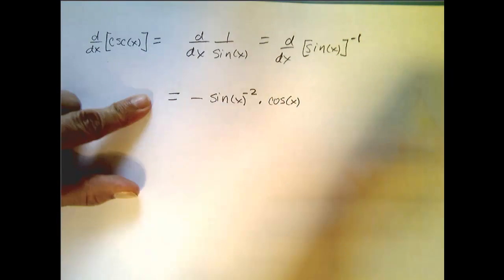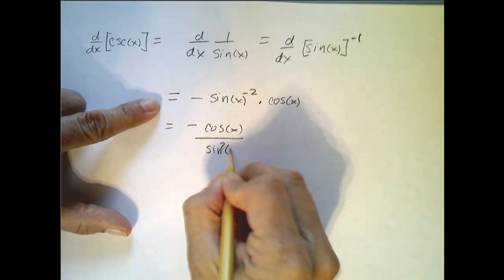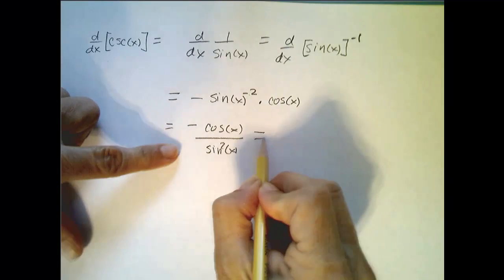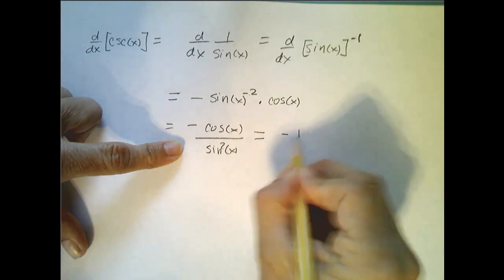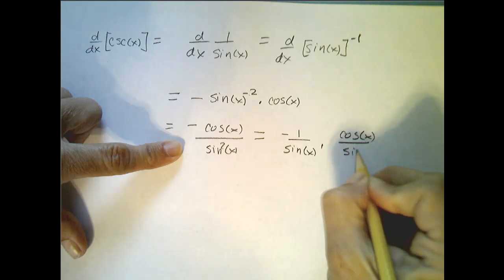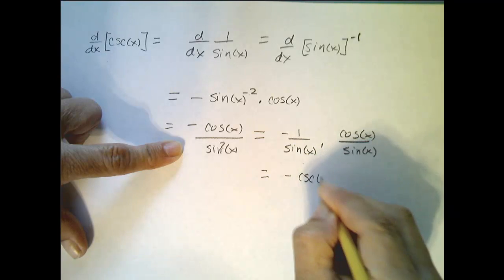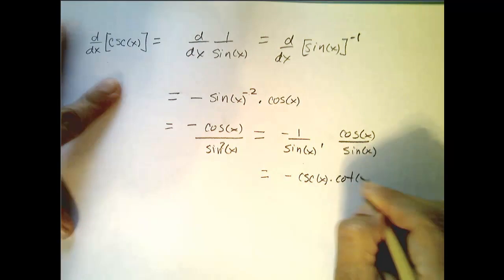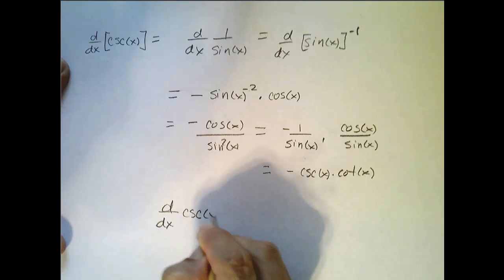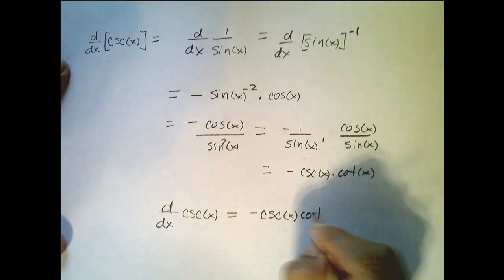Cleaning this up, I get negative cosine of x over sine squared of x — the negative 2 power just means moving it to the bottom. I can split this into negative 1 over sine x times cosine x over sine x. This simplifies to negative cosecant of x times cotangent of x. So the derivative of cosecant of x is equal to negative cosecant of x cotangent of x.